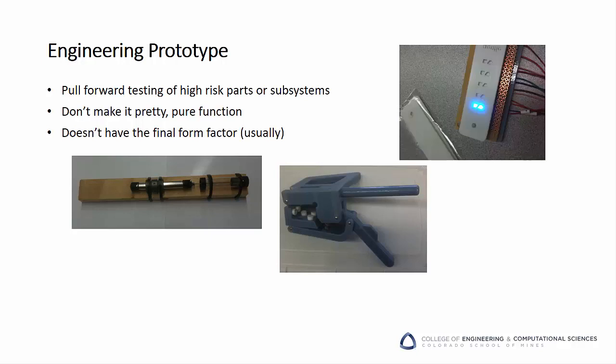One final example of an engineering prototype is this light board, created to test different LED types and lens configurations so that the final look of a consumer product would be just right. While there are optics programs that could have probably determined this analytically, sometimes it's more effective to simply build and test an engineering prototype.